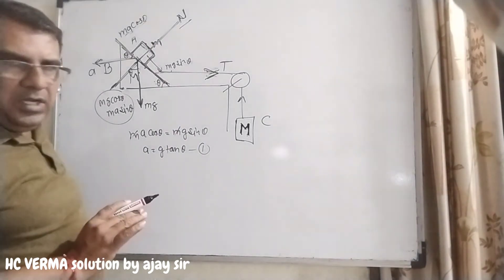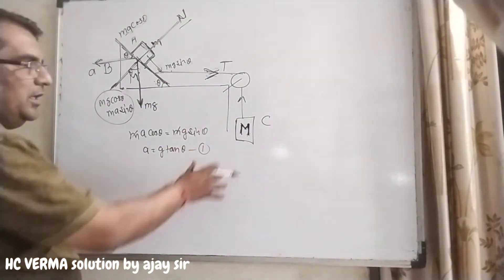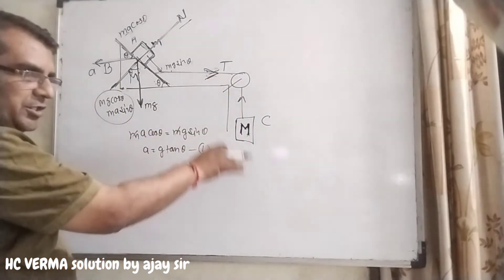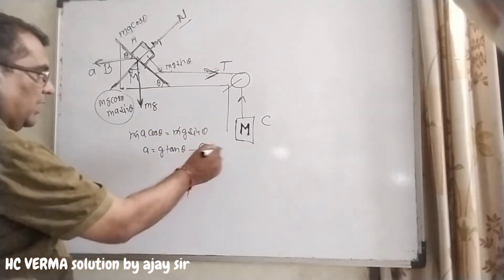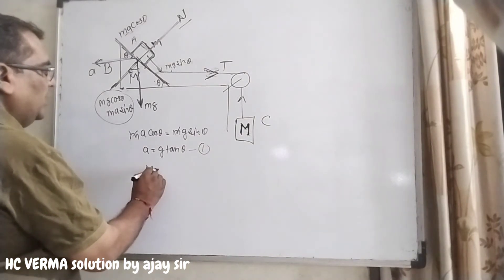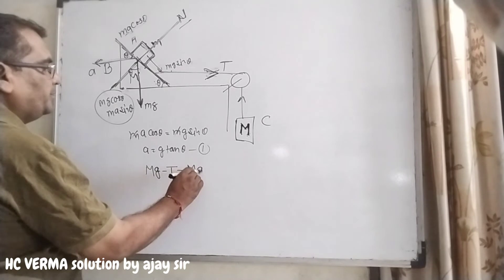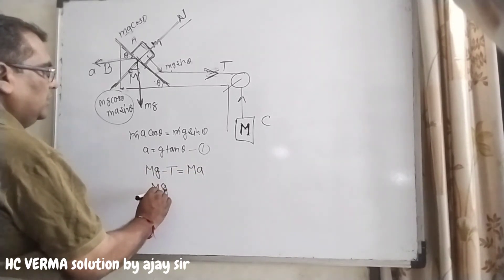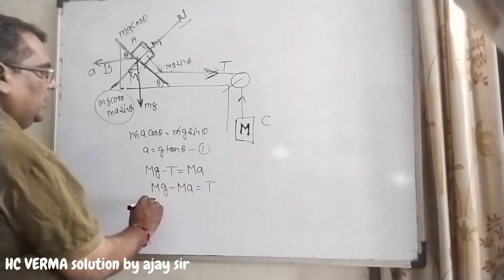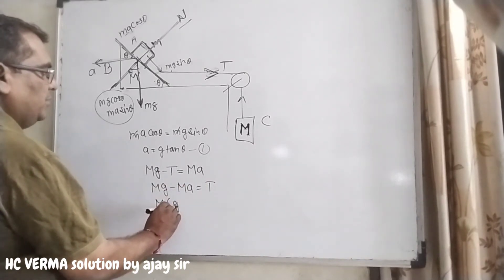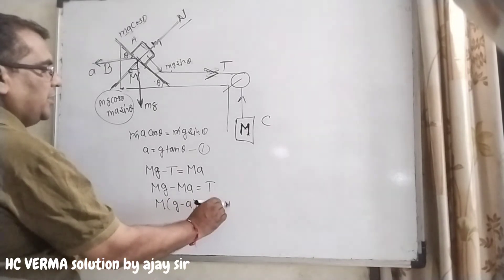Yahan tak aapko samajh mein aa gaya hoga. Ab hum block C par chalte hain. Ismein M hanging hai, neeche ki aur ja raha hai, iska matlab weight neeche ki aur lag raha hai. Toh yeh ho jayega: Mg minus T equal to Ma. Toh Ma equal to T, yani M into (g minus a) equal to T — equation number second.